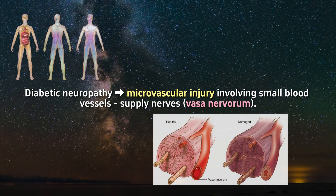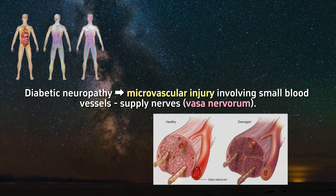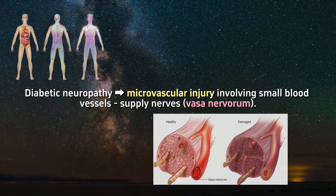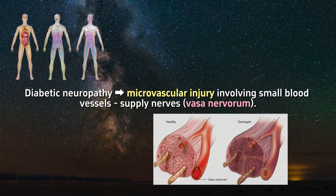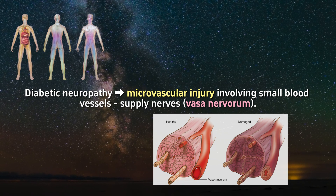Diabetic neuropathy is thought to result from a microvascular injury involving small blood vessels that supply nerves, known as vasa nervorum.